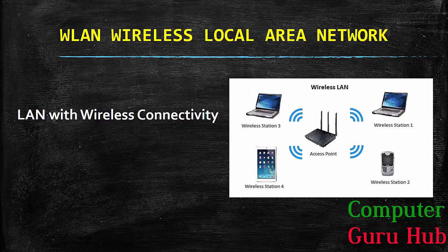Next we have Wireless LAN, called WLAN. Wireless LAN is nothing but a LAN connectivity or a LAN network with wireless connectivity. It means when I use the same components to create a LAN, but instead of an Ethernet cable or any kind of wired network, I am using wireless connectivity. When multiple devices are connected together via a wireless LAN access point, it is known as Wireless LAN.